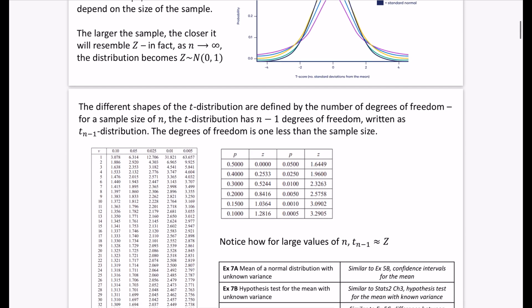The different shapes of the t distribution are defined by the number of degrees of freedom. For a sample size of n, the t distribution has n minus one degrees of freedom. That's reminiscent of the fact that when we're doing the sample variance, we're dividing by n minus one. If the sample size is n, the number of degrees of freedom is always one less than that. And we would write that as a t_{n-1} distribution. Whatever the bit in the subscript next to the t is tells us how many degrees of freedom there are. The degrees of freedom is one less than the sample size.